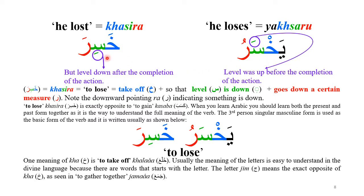On the opposite side, 'Yaqsiru' and 'Hasira' — you are losing. Before completing the action, in the present tense, 'Yaqsiru' shows the level still in process. In the past tense, when the action is complete, your level is down — 'Hasira.' You usually have to learn these pairs together to get the complete idea about the meanings hidden in Fatha, Kasra, and all these features of the divine language.